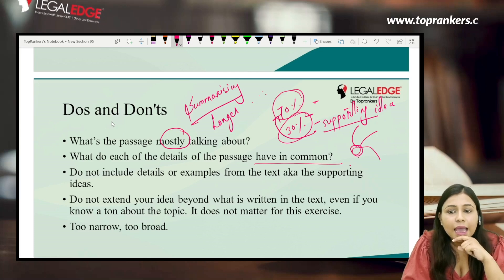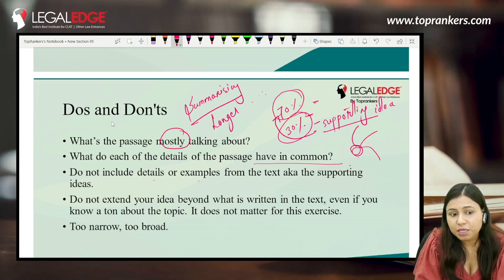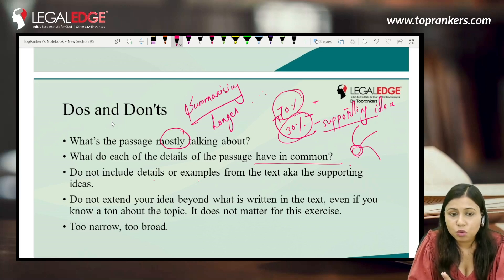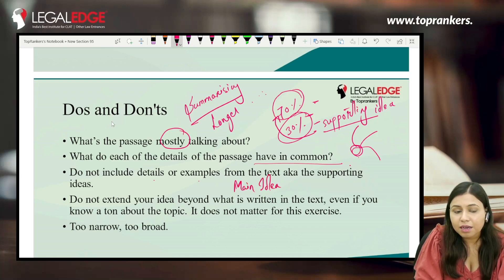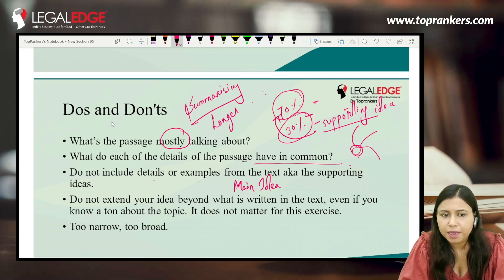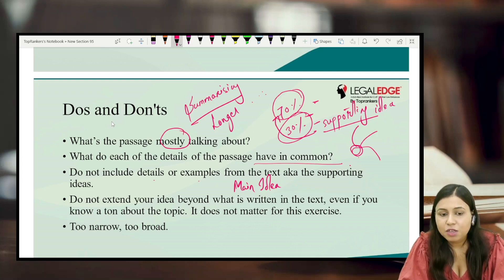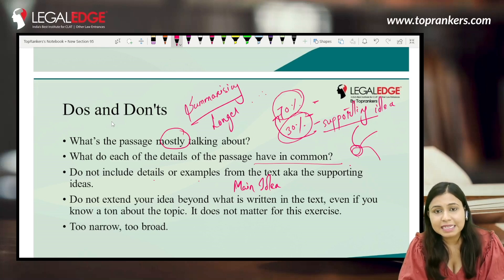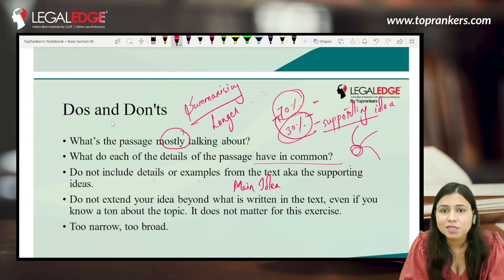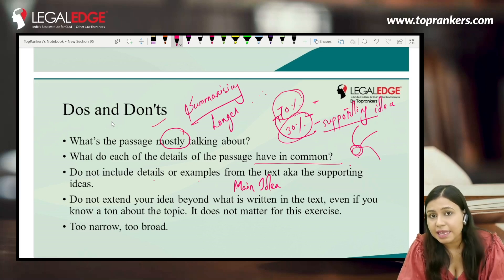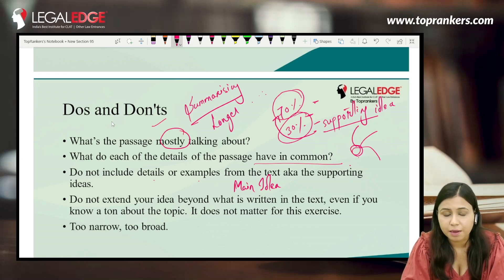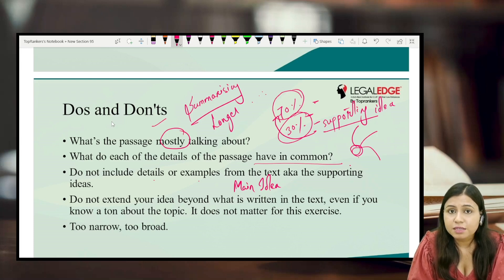An important don't: do not mistake details or examples from the text for the main idea — these are supporting ideas. For example, a passage may use a particular novel as an example, but the passage is actually about something else. A student once thought the whole passage was about that novel because it was discussed extensively. You have to understand that the novel or example is being used to reinforce the main idea. Always check what was said in the first and last paragraphs.